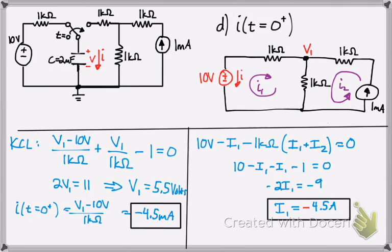Another way to do it is KCL. You can go ahead and walk through that if you'd like. You find the voltage first and then use that to find the current, and you don't have to worry about the sign that way. On the right is kind of by inspection doing some basic math, and on the left is going through with the normal KCL method.